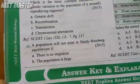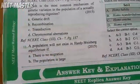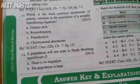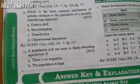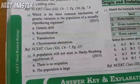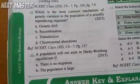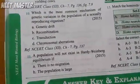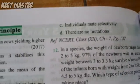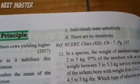A population will not exist in Hardy-Weinberg equilibrium if: there is no migration; the population is large; individuals mate selectively; or there are no mutations.